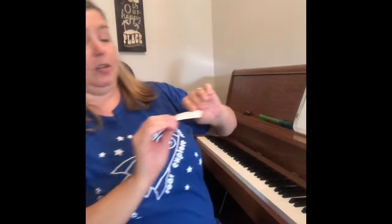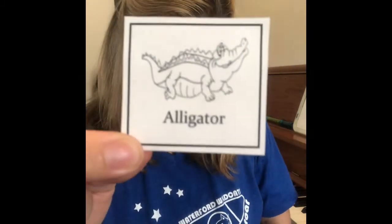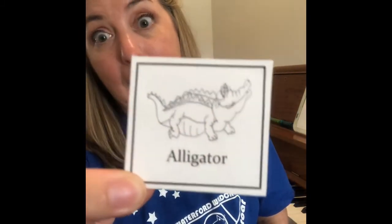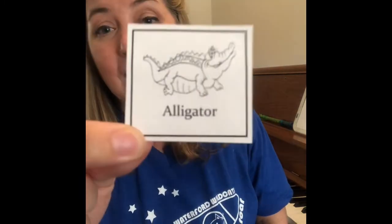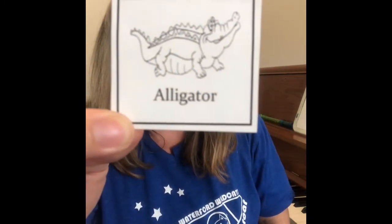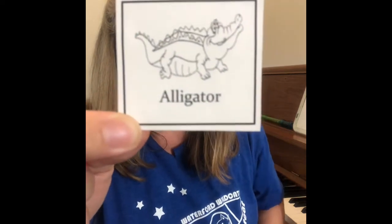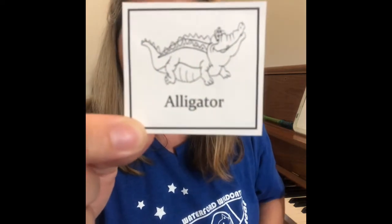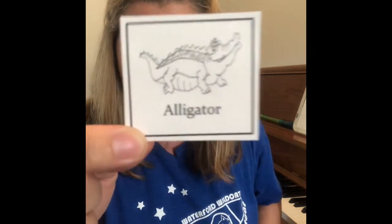I'm going to put the octopus up here next to the lion and the fish. And here's our last one for today. Of course, we have to have an alligator because we live in Florida — there are lots of alligators. So this one sounds like this. Alligator. Try it with me. Alligator. Say it and clap it. Alligator. Good job.